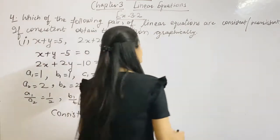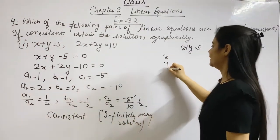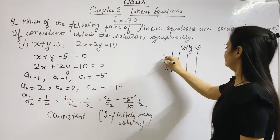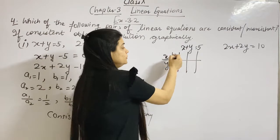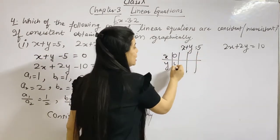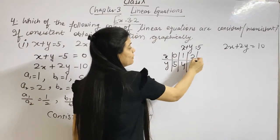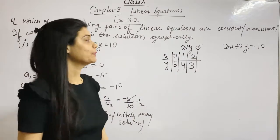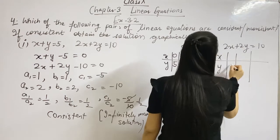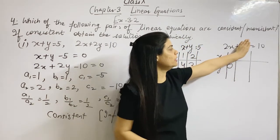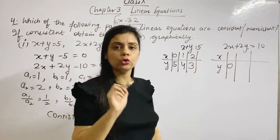Since it is consistent, we need to solve this graphically. For this we need to make a table. We put values: when y equals zero, x equals 5. When x equals zero, y equals 3. For the second equation, 2x plus 2y equals 10 — when y is 0, 2x equals 10, so x equals 5.